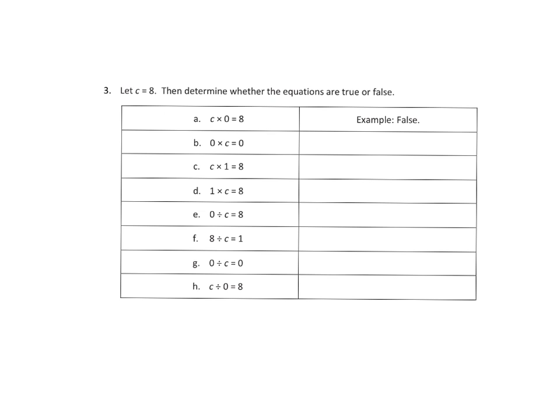So let's do a little bit of practice here. It says let C equal 8 and then determine whether the equations are true or false. For this first one we're going to change that to 8 times 0 equals 8. Well, 8 times 0 equaling 8, that's a false statement. Let's try the next one. 0 times 8 is equal to 0. Well, that's a true statement. Then we've got 8 times 1 equaling 8. That's a true statement. How about 1 times 8 equaling 8? That's a true statement.